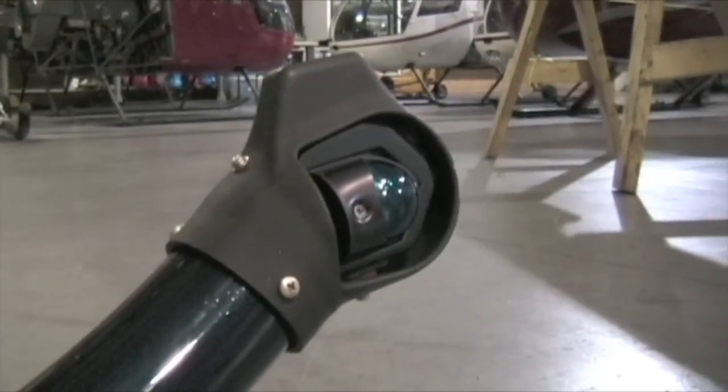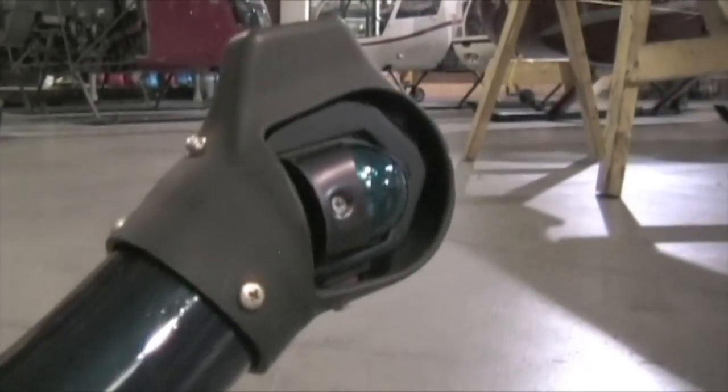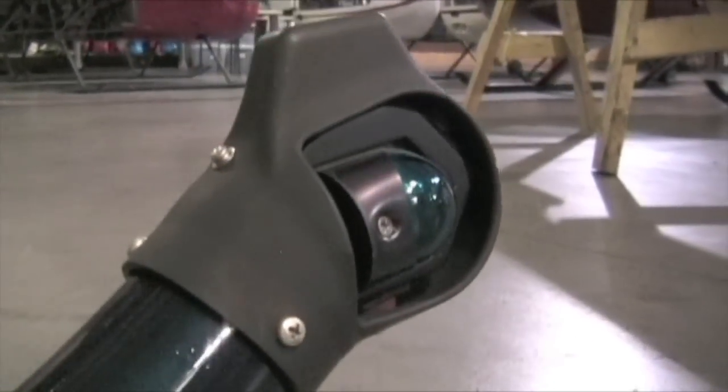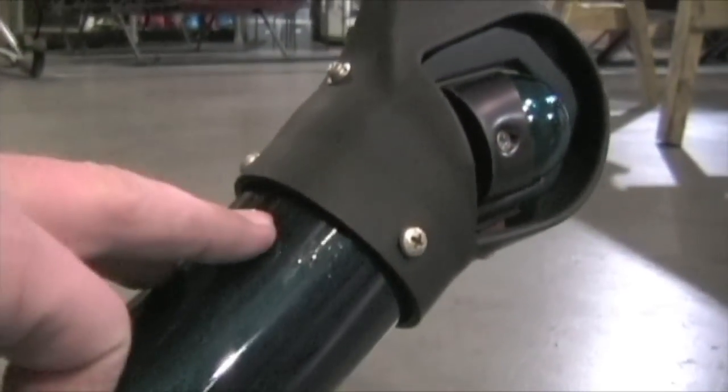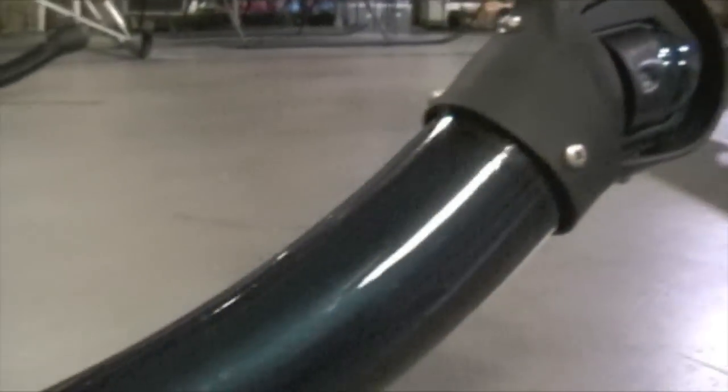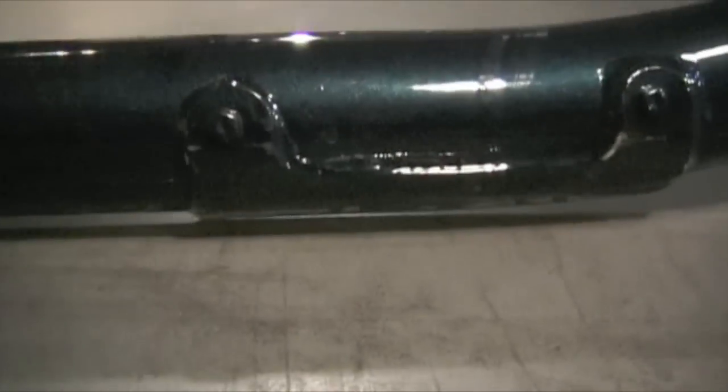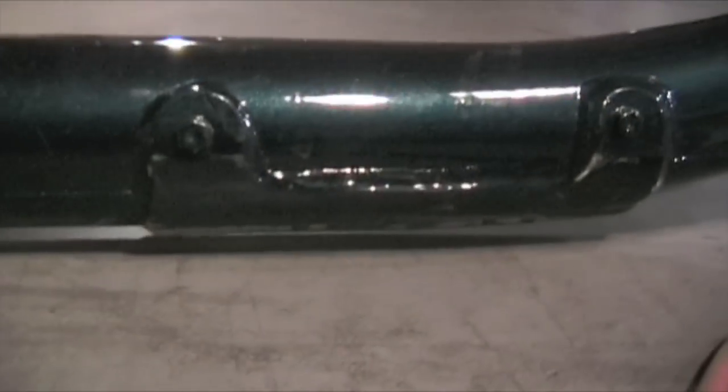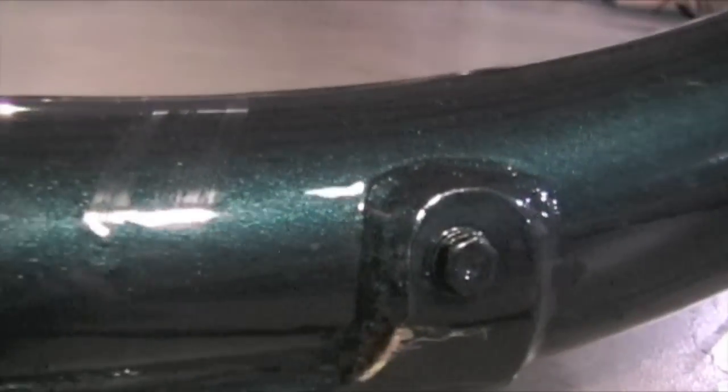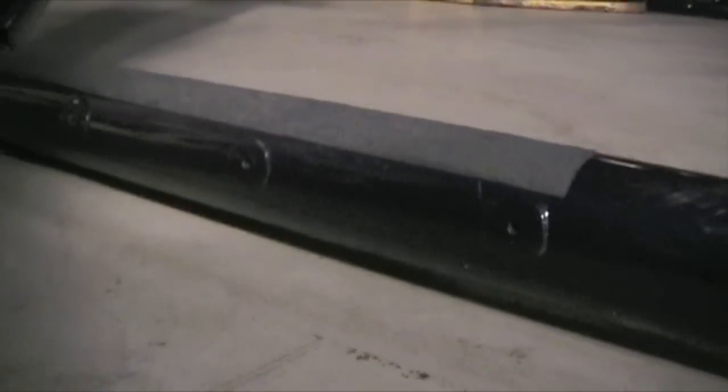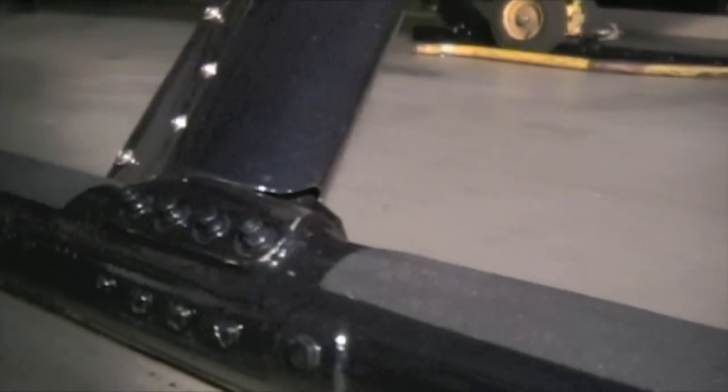So starting at the front of the right skid tube is your position light. You can tell it's green. This bracket screws onto the tip of the skid tube right here. Make sure all those are nice and tight. Walking down the skid tube. Here's a skid shoe. Make sure there's adequate clearance on the skid itself. And that it's not coming out. Bolted here. And here on both sides. Anti-slip tape. Make sure that's not coming off.